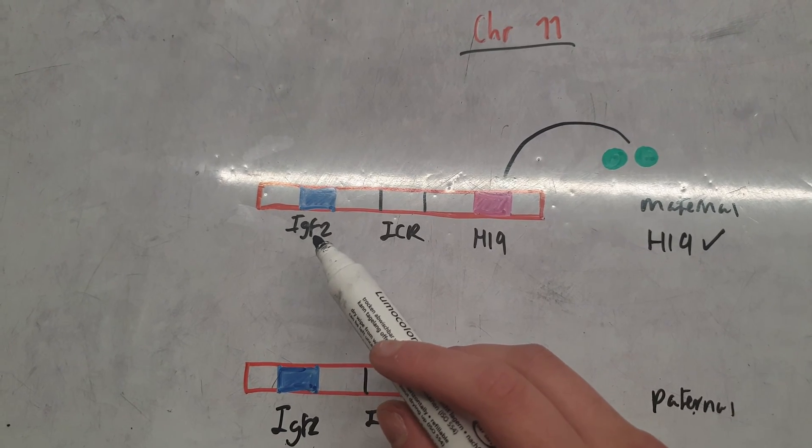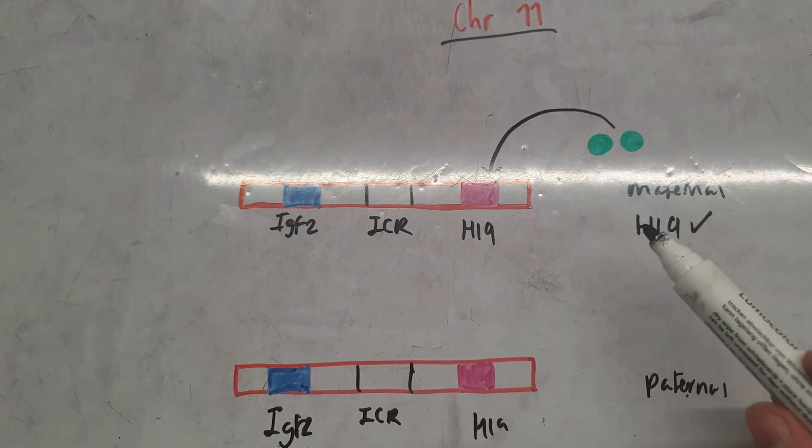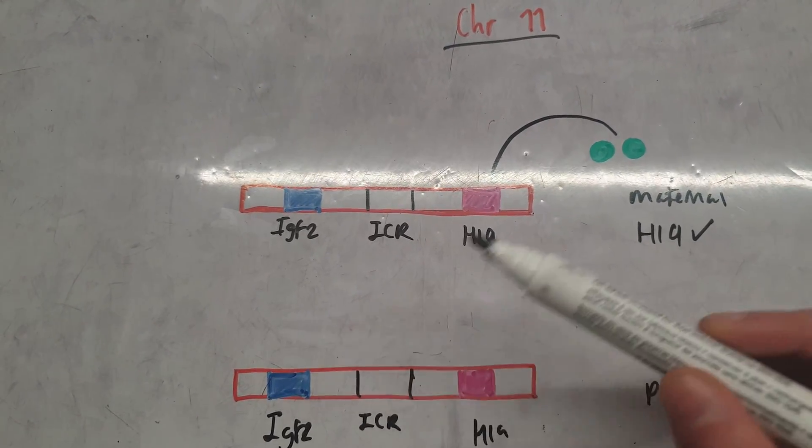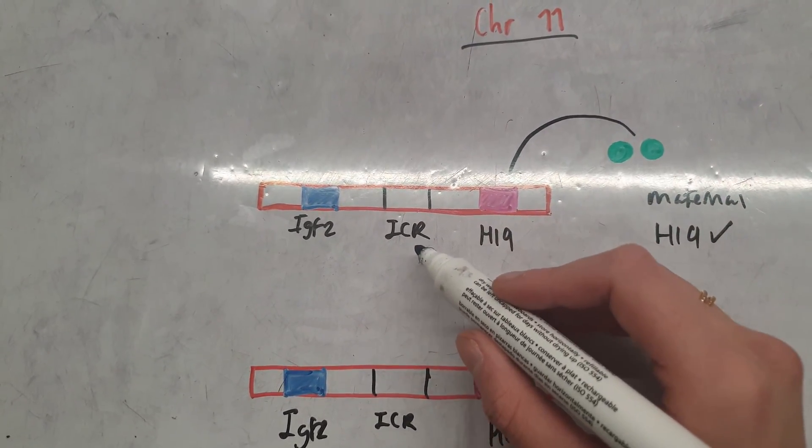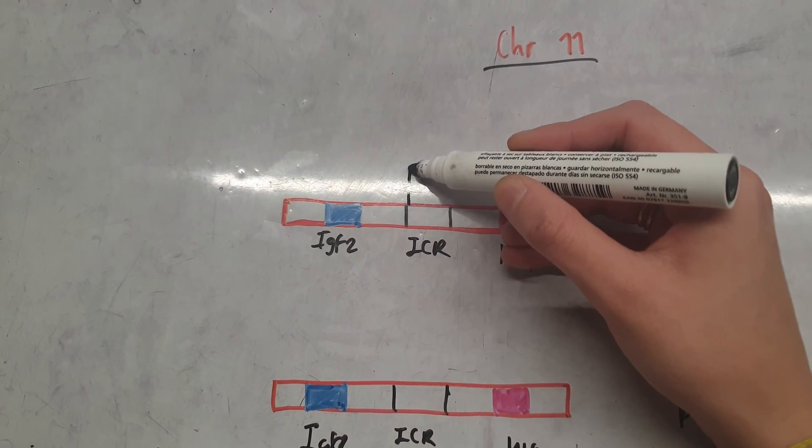Now, we don't want IGF2 being expressed from the maternal chromosome, so we have to silence it. To do this, we have this imprinting control region here with a cluster protein that binds, known as CTCF.